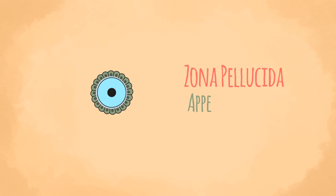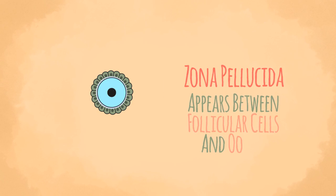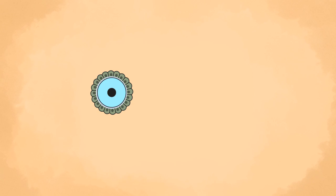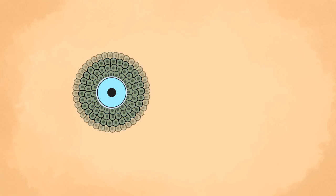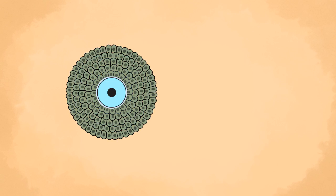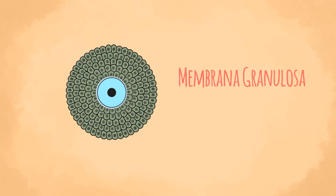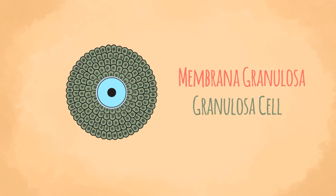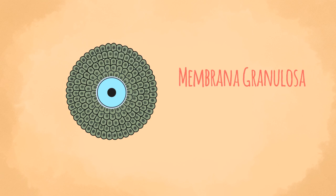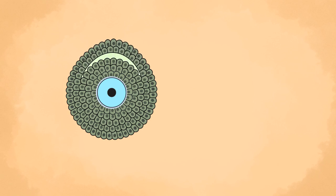A homogenous membrane, the zona pellucida, appears between the follicular cells and the oocyte. The follicular cells proliferate to form several layers, which constitute the membrana granulosa. The cells may now be called granulosa cells. A cavity then appears within the membrana granulosa, and with its appearance a follicle is formed.